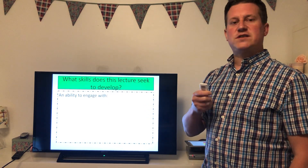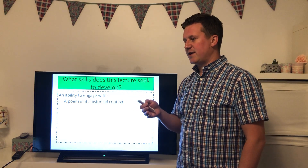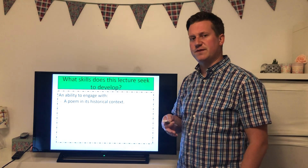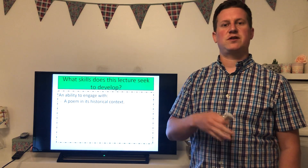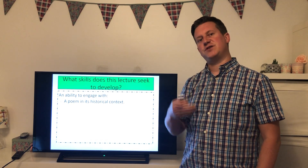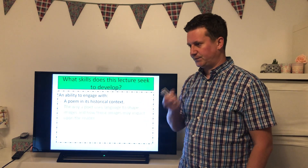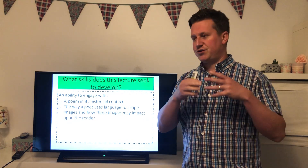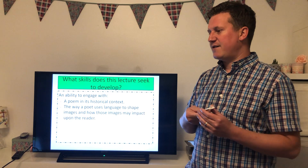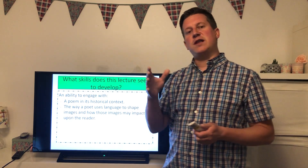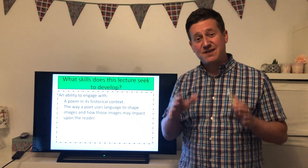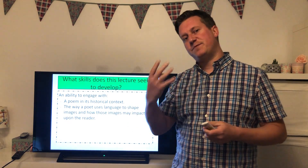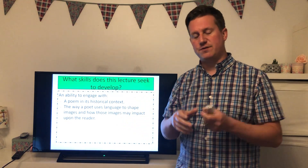First of all, we're trying to develop an ability to engage with a poem in its historical context. We're going to start with a little bit of context, which I think is important for this poem, so we can understand what Armitage was trying to do when he wrote it, what his message to the reader was, and what he was trying to convey. We'll focus on the way a poet uses language to shape images and how those images impact upon the reader.